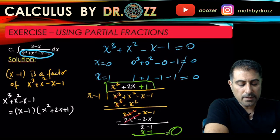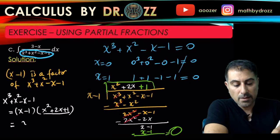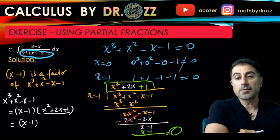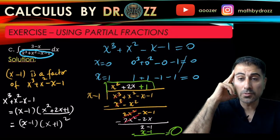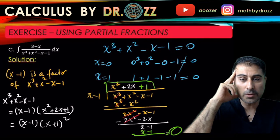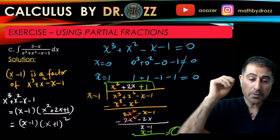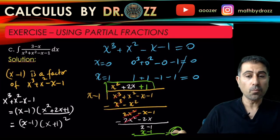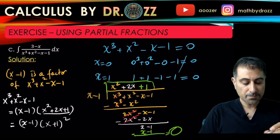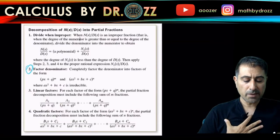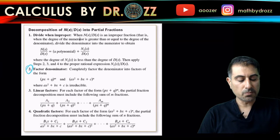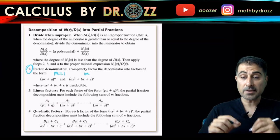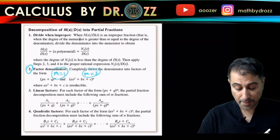The good news is that x squared plus 2x plus 1 is (x plus one) squared. So x cubed plus x squared minus x minus one factors as (x minus one)(x plus one) squared. This is how we factored the cubic in two different ways. I'd recommend using the long division approach because reordering and grouping terms may not always work.